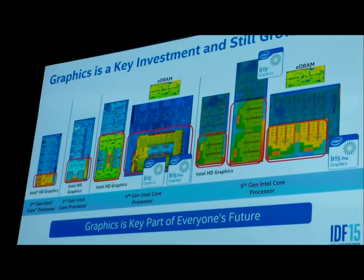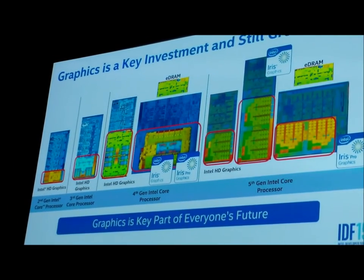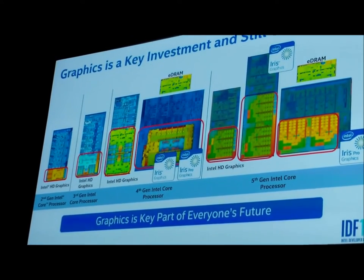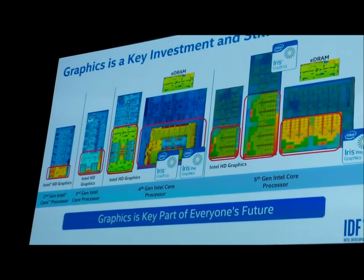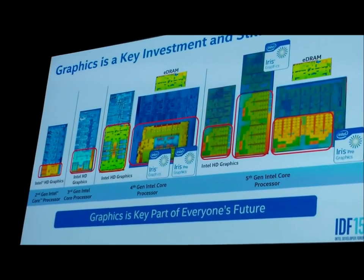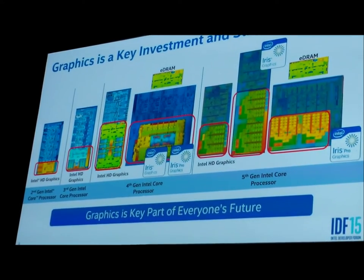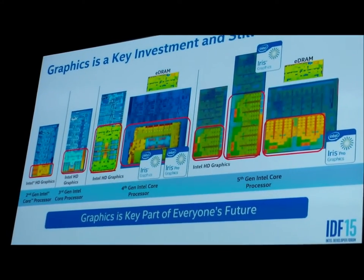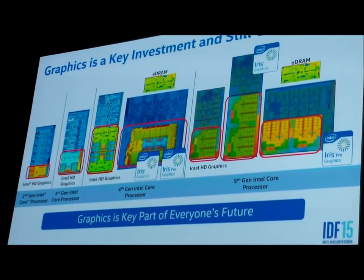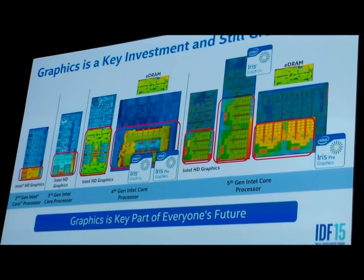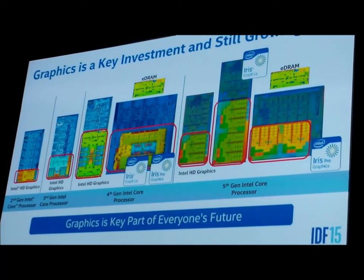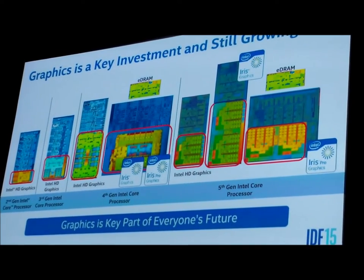One of the ways Intel measures this investment is die area — putting your money where your mouth is. If you go back to Sandy Bridge on the far left — that's a four-core CPU — and compare it with what we've done on Broadwell, we have two variants of Broadwell with GT3 and 48 execution units, plus the eDRAM investment. You can see it's taking up a pretty healthy amount of die area — over 50% more than a CPU core, depending on the SKU and how many CPU cores are present.